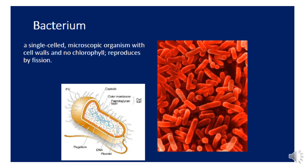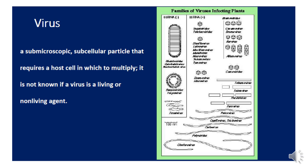A virus is a sub-microscopic, subcellular particle that requires a host cell in which to multiply. A plant virus cannot reproduce in dead tissue — it must multiply and reproduce in living cells. It is not known if a virus is a living or non-living agent, because it does not have a cell structure. It is composed of two components: number one, a protein coat; and number two, nucleic acid — which could be DNA or RNA. Since there is no cellular structure, we cannot definitively classify the virus as living or non-living.